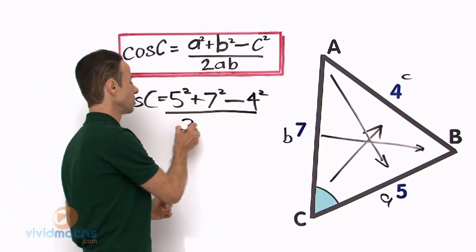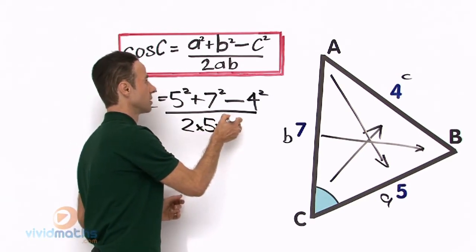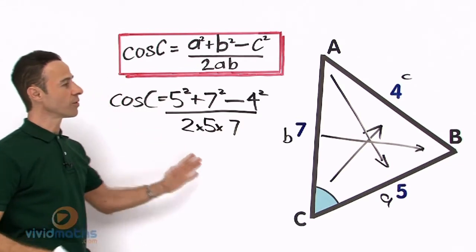Now underneath we have 2 times a times b, so that is going to be 2 times 5 times 7. OK, that is all the values from there substitute into the formula.